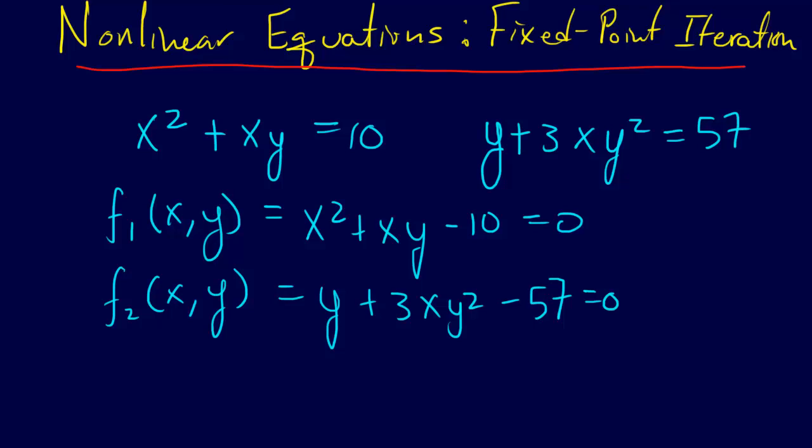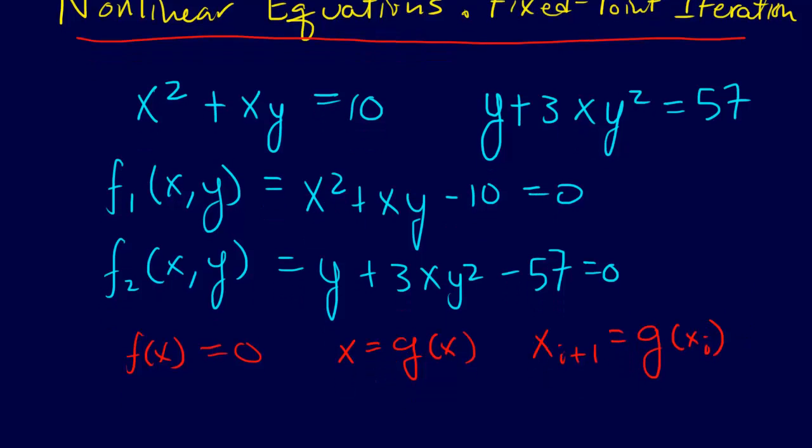Now let's recall the approach of fixed point iteration. We have some function F of x and we want to solve it where F of x equals 0. So what we did is we said we're going to rearrange this function F of x to have the form x equals G of x. And so if we can do that, then we just say x i plus 1 equals G of x i. And then we just iterate on that.